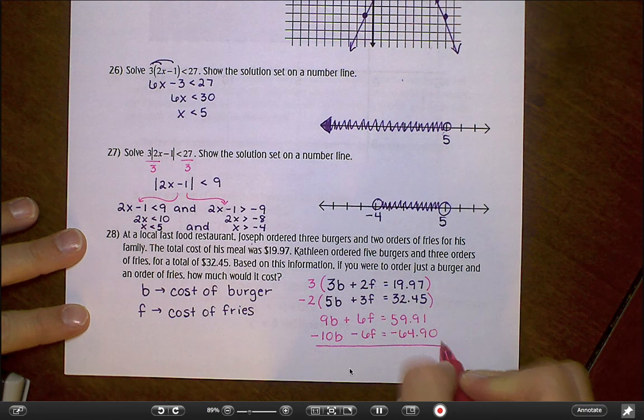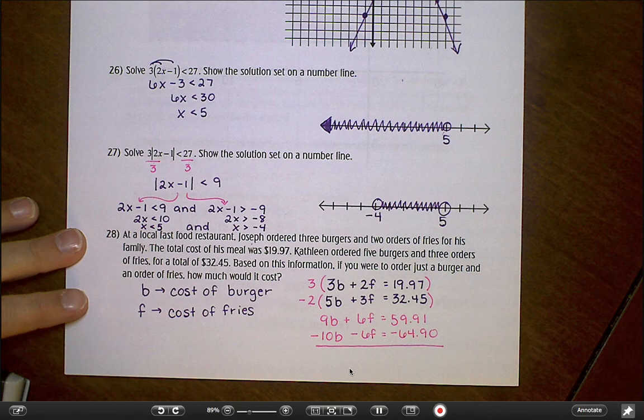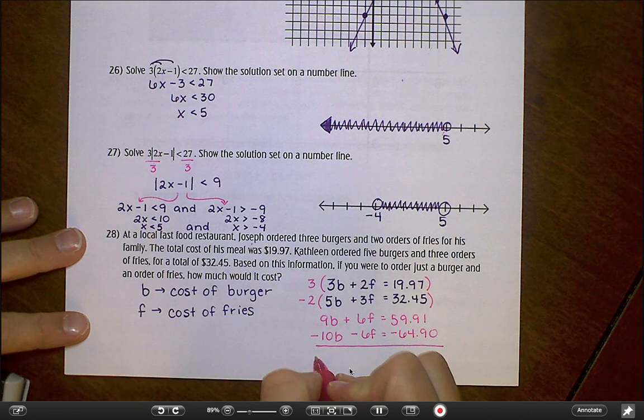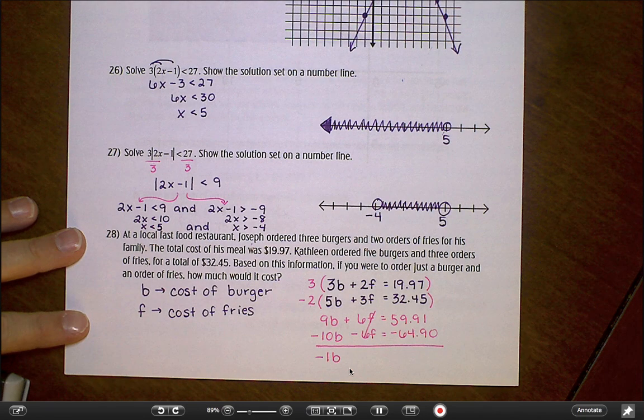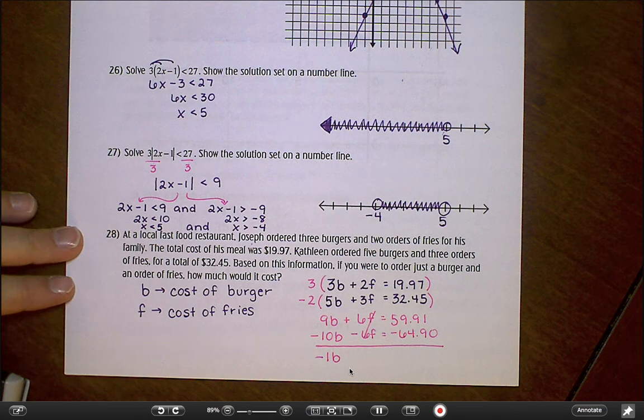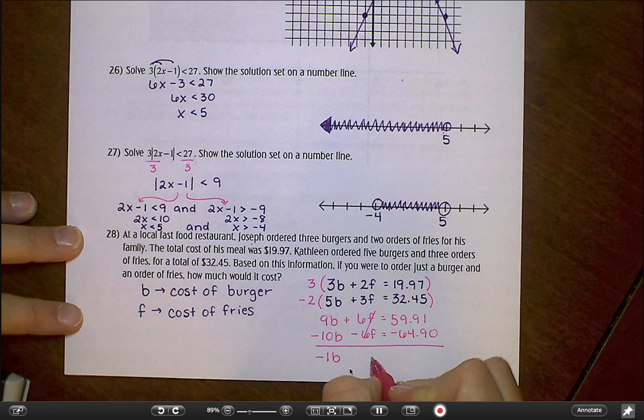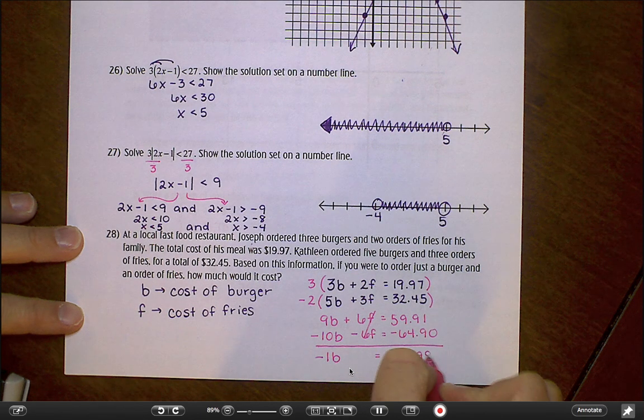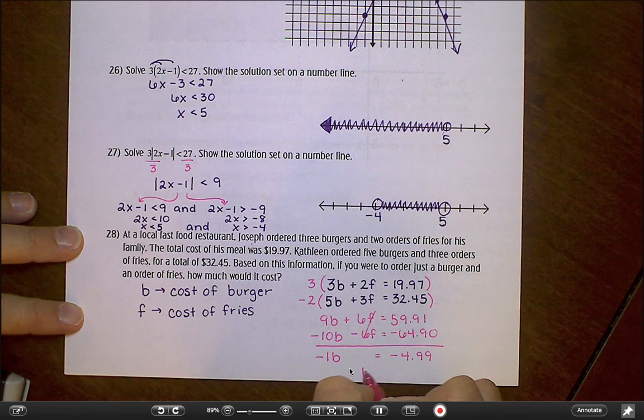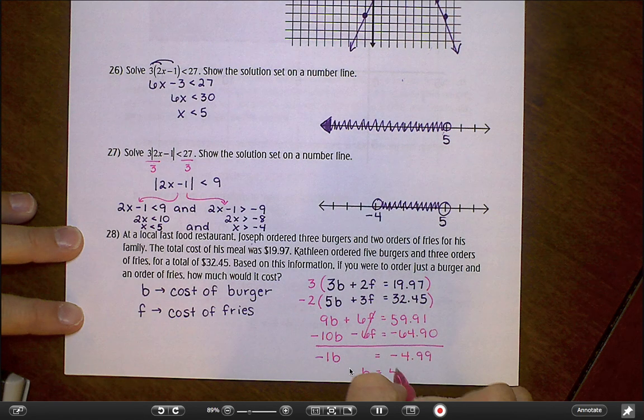Top equation now says 9B plus 6F equals whatever three times 1997 is. It's going to be 59.91. My bottom equation multiplying by negative two, I get negative 10B minus 6F equals negative 64.90. So now let's add these two equations together. 9 plus negative 10 gives me negative one. That's not too bad. My Fs cancel. And now I'm going to do 59.91 minus 64.90, and I end up with negative 4.99. So if I were to divide by that negative one, I would find that the cost of a burger is 4.99.